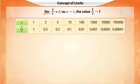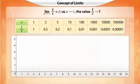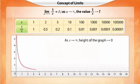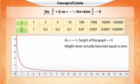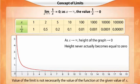The same can be verified by looking at the graph of the function. We can see that as X approaches infinity, the value of the function — given by the height of the graph — approaches 0. Hence, the given limit takes a value of 0. We should note that the height of the graph will never become equal to 0. Hence, the value of a limit is not necessarily the value of the function at a given value of X, but it is the value that the function approaches as X approaches a given value.